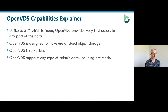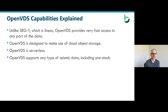Comparing OpenVDS to SegWire — which is a linear tape-based format — OpenVDS provides very fast access to any part of the data. The individual objects are spread throughout the object store, allowing you to make full use of cloud technology. It's serverless, meaning API access to objects can be defined, giving you random access capability. It also supports any type of seismic data, including pre-stack data. It's a robust format, modern in architecture and design, supporting any seismic workloads.